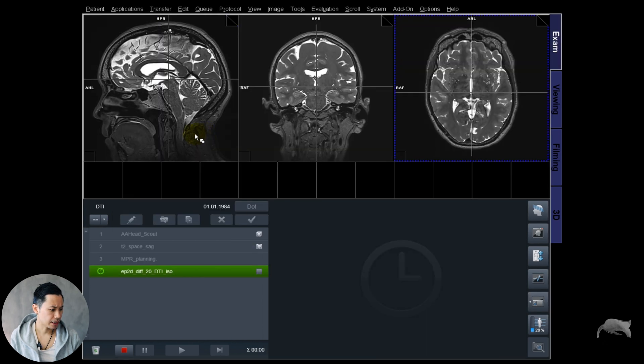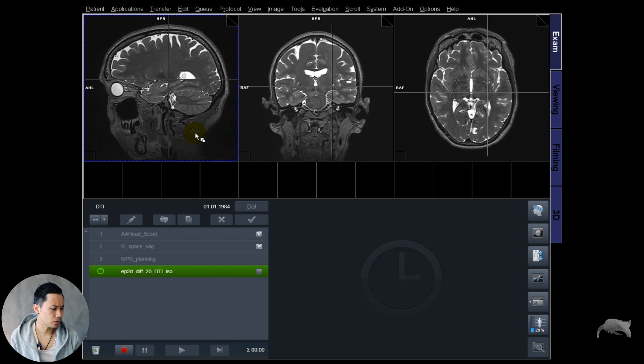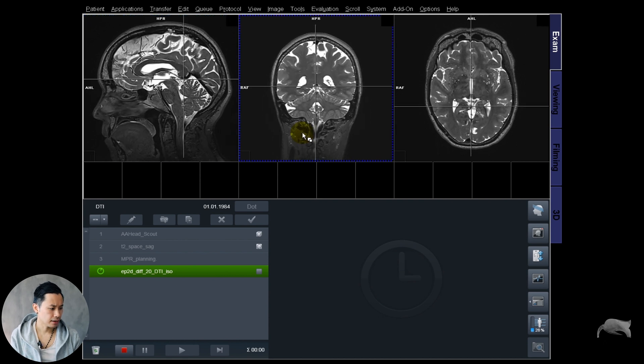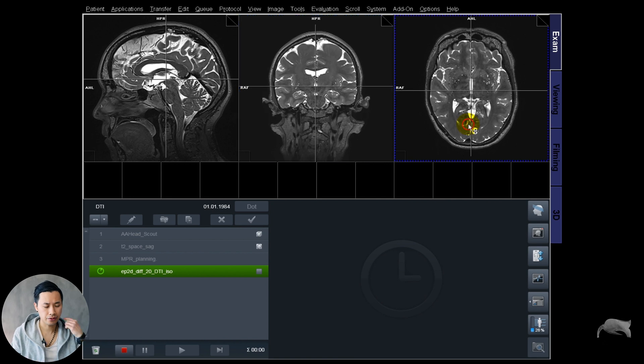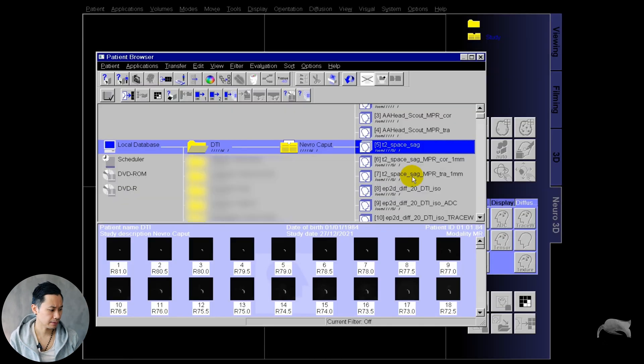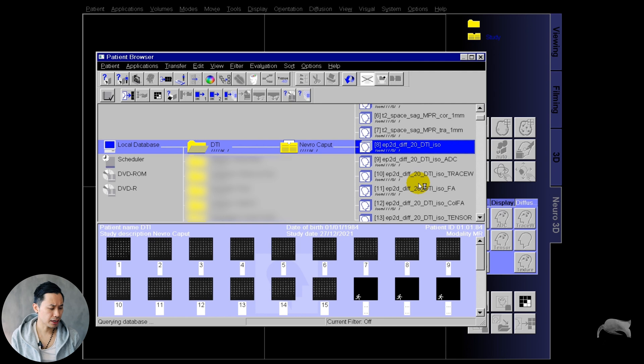Let's run that sequence. This is the T2 3D I already scanned. I'm going to use this as a reference when doing the post-processing. The sequence is done now.